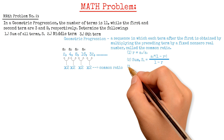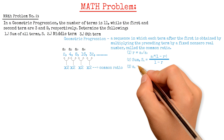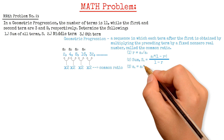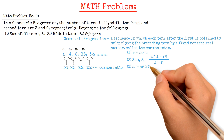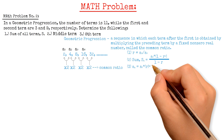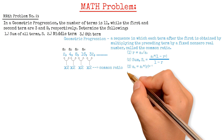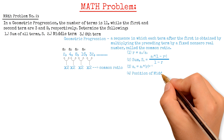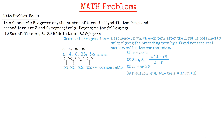Third is the nth term: An equals the first term A1 multiplied by the common ratio R raised to the power of N minus 1. And the last one is the position of the middle term, which equals one-half multiplied by the number of terms N plus 1.